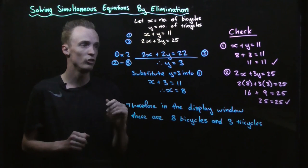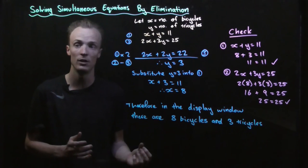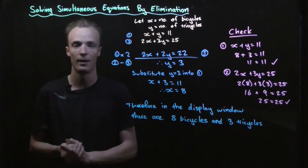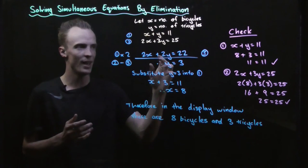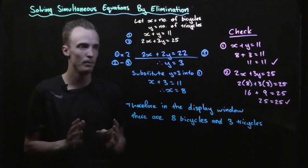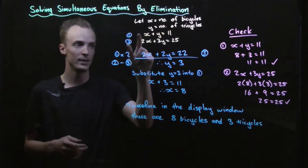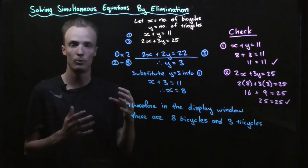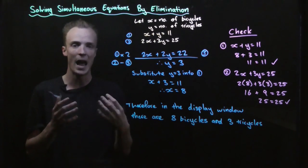There are a couple of important things to remember when using elimination. First, you can choose to eliminate either the x value or the y value — whichever variable you're using — until you've got one variable remaining; it doesn't matter which one you choose. Second, to eliminate you can either add the equations together or subtract them. Which one you use depends on the coefficients: if the sign in front of the coefficient is the same, you subtract them; if the signs are different, you add them.